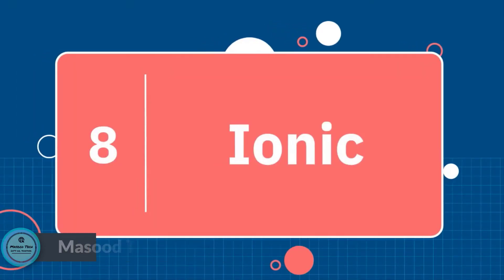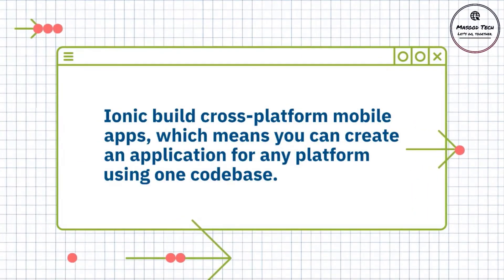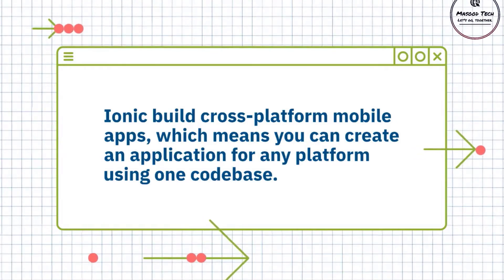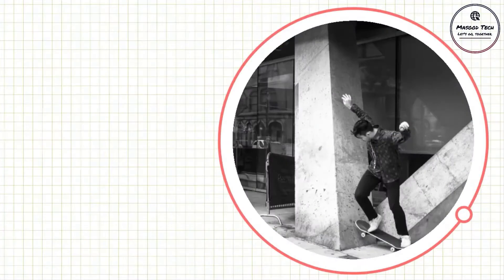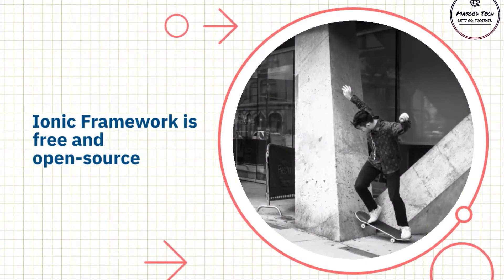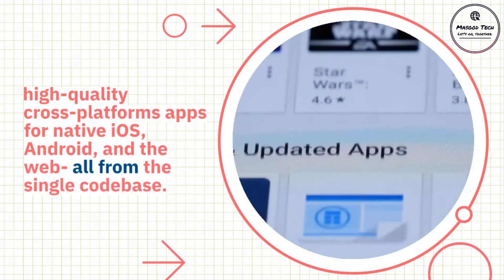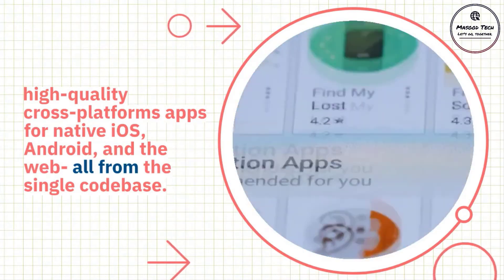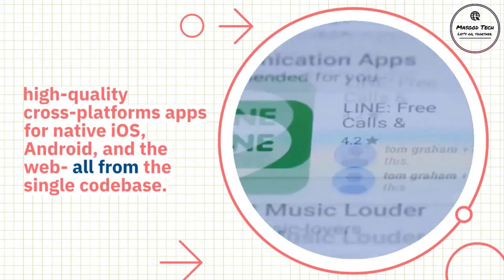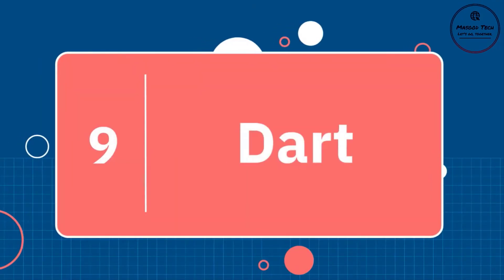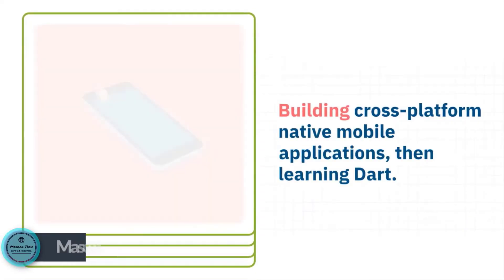Number eight: Ionic. This is another framework for developing hybrid mobile applications using JavaScript. Ionic also allows you to build cross-platform mobile apps, meaning you can create an application for any platform using one code base. The Ionic framework is free and open source and provides a portable UI toolkit for developing high-quality cross-platform apps for native iOS, Android, and the web — all from a single code base. It also has Ionic React, which leverages React for building hybrid mobile apps.